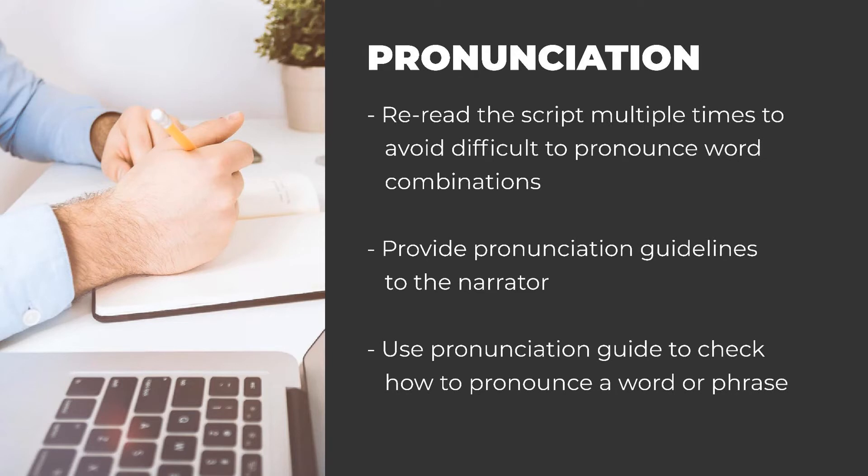If, in a script, you use word combinations that are difficult to pronounce together, the talent may have a difficult time reading them, and as a result, learners may have problems understanding what they hear. One way to avoid this is to re-read the script multiple times and make relevant changes to wording and grammar. Also, when writing audio scripts, make sure you provide pronunciation guidelines to the narrator.